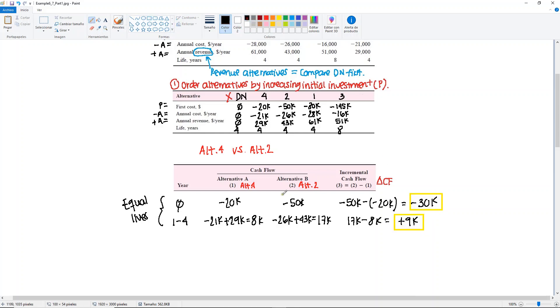We can say that since this occurs in year 0, this will be our P, and this one occurs every year from years 1 through 4, this will be our A. Now we need to set up our present worth equation using these two values. This is going to be minus $30,000, already in P so no need for conversion factors, plus $9,000 find P given A of delta i star for four years.